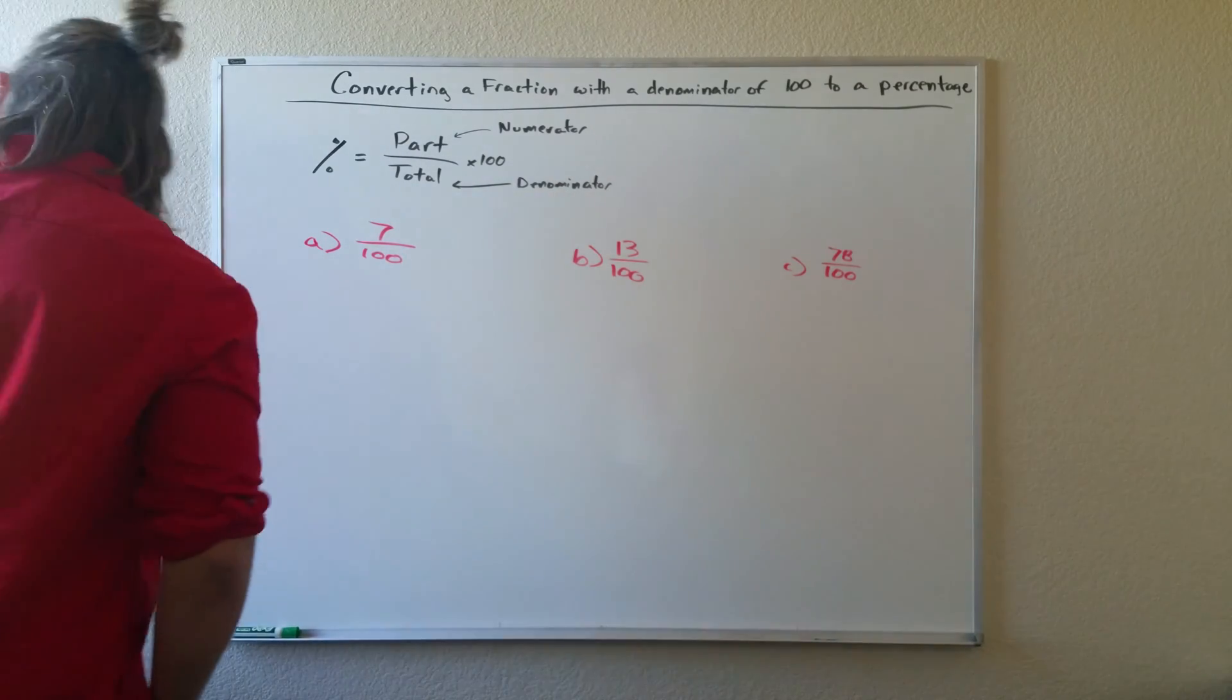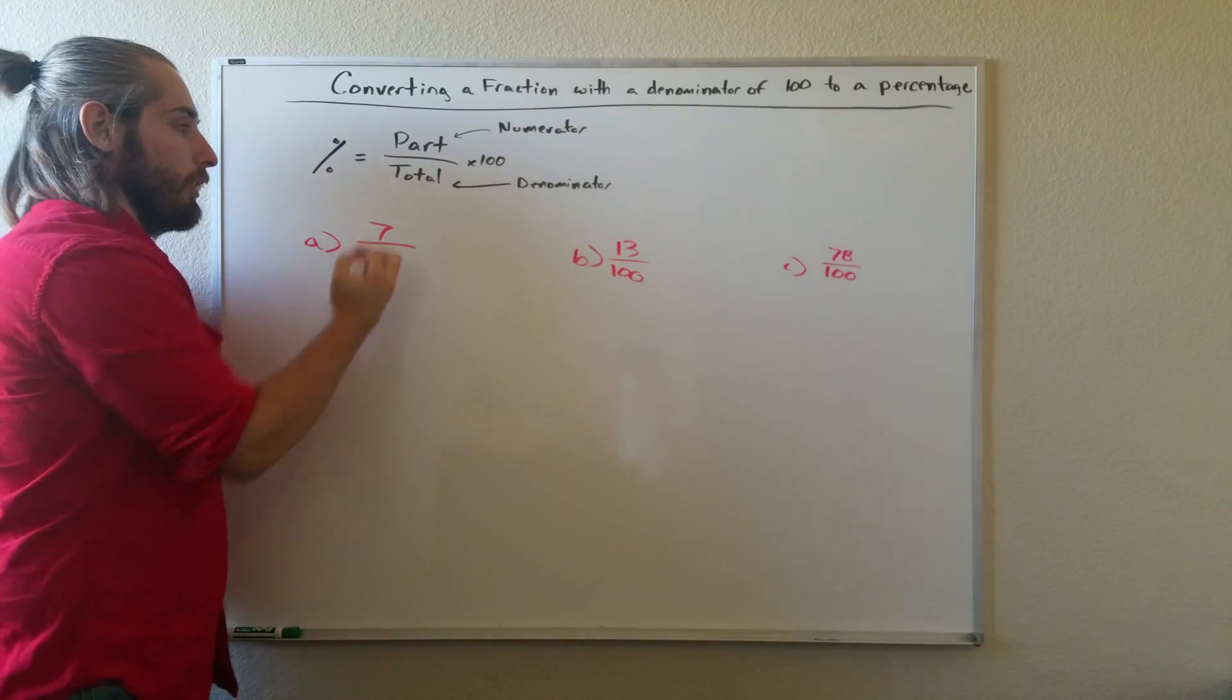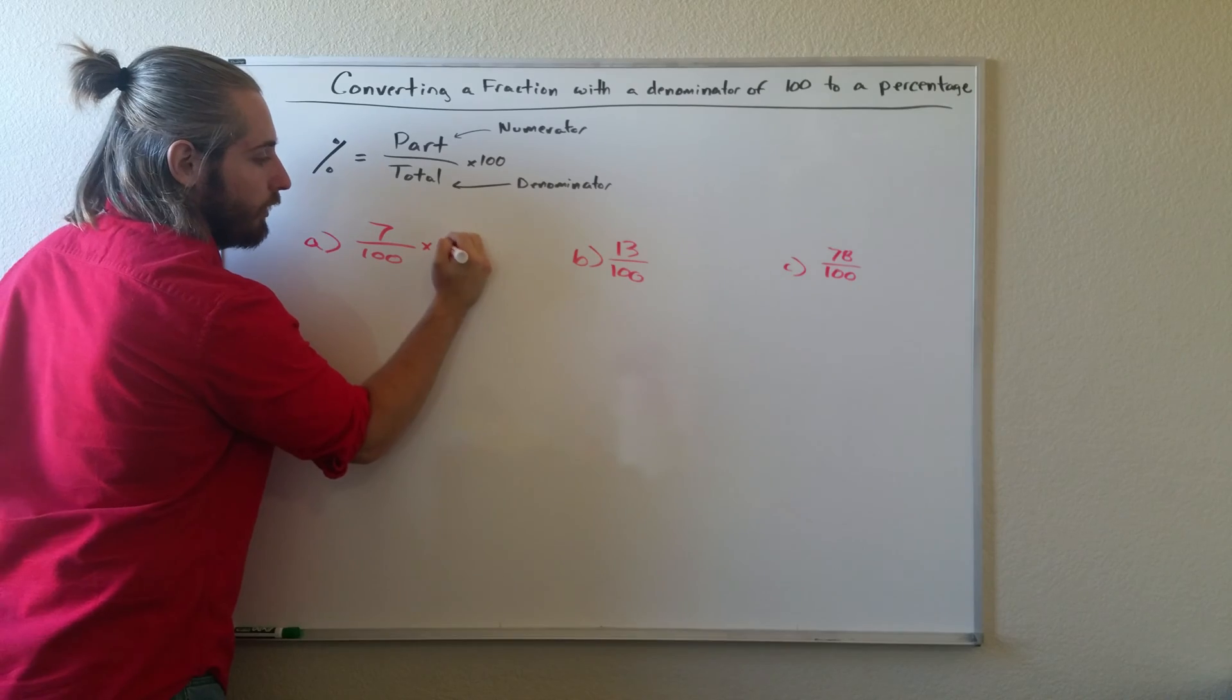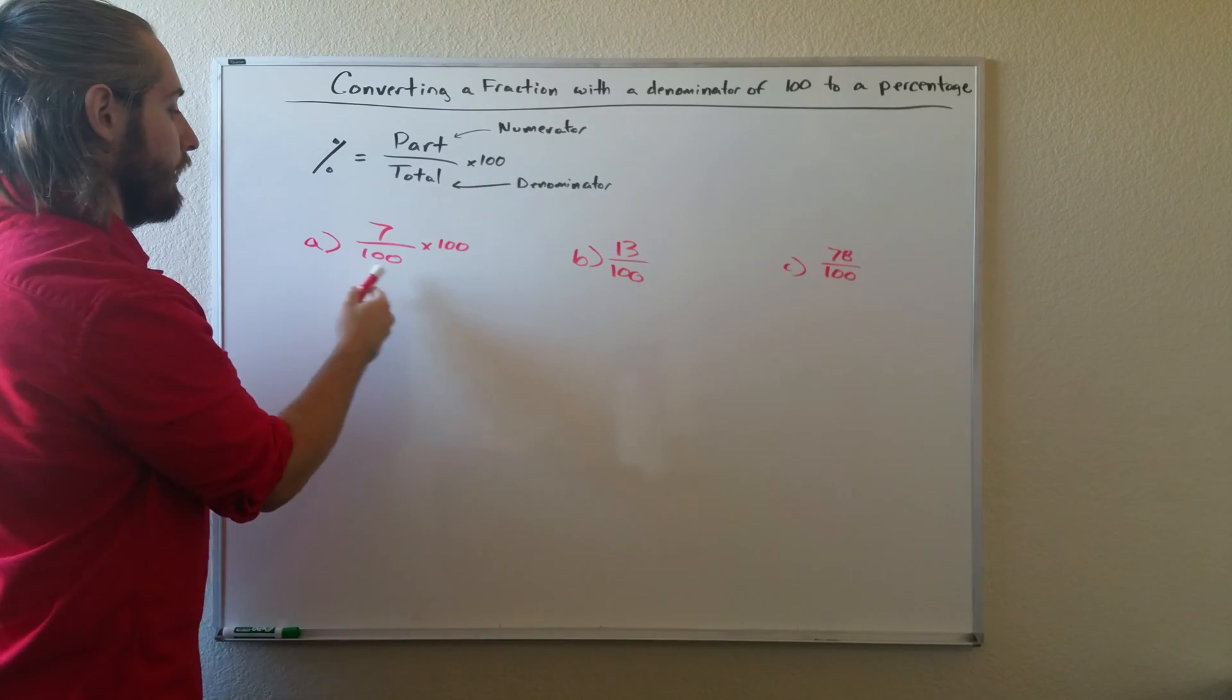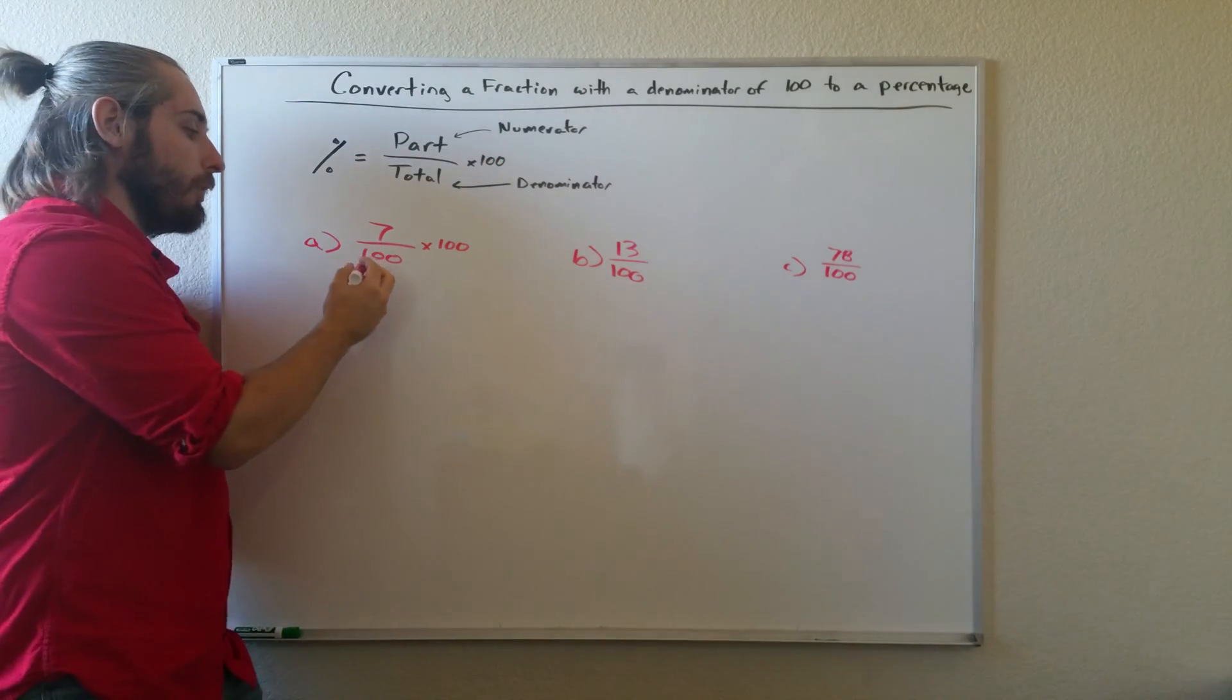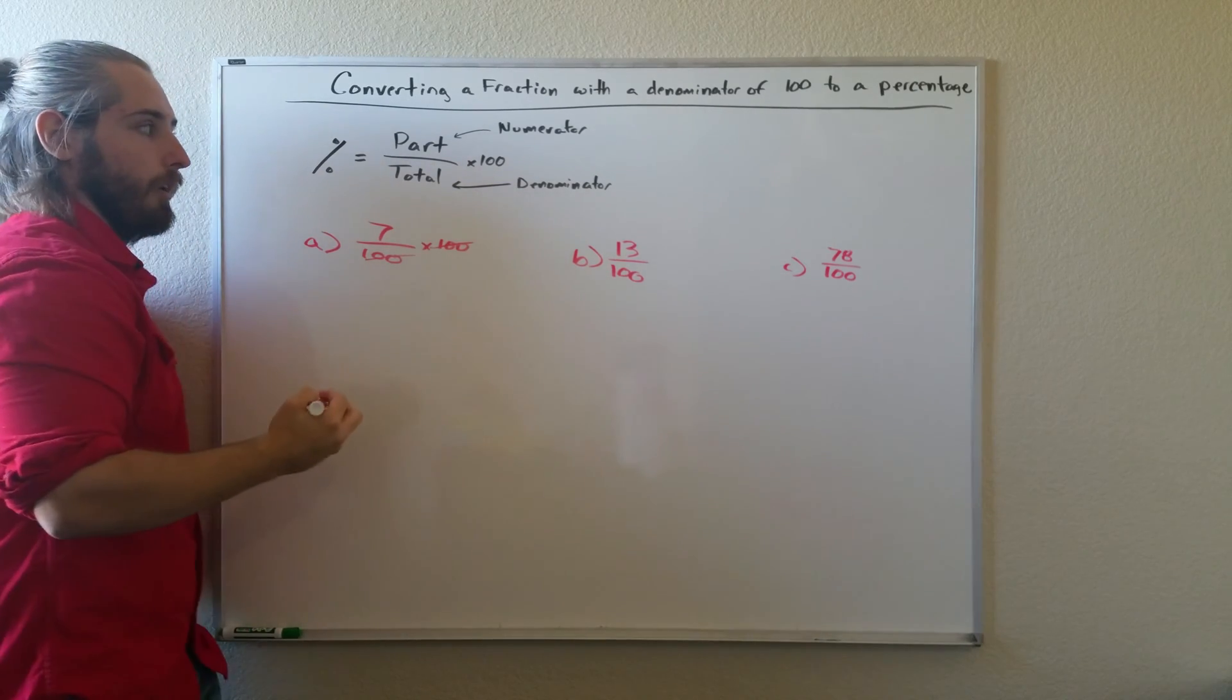I'll show you why. It gives us our part over total. To find our percent, we just need to multiply it by 100, and we can tell by our topic name that this denominator will always be 100. So if we're multiplying and dividing something by the same number, we can just cancel them out with one another.